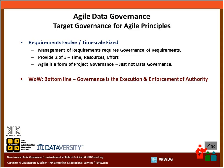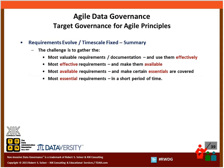The bottom line is that with governance, we want to execute and enforce authority — and we're going to do that through our agile efforts, because the agile efforts are not going away. We want to make sure the data aspects of these things are being addressed. The challenge is to gather the most valuable requirements and documentation, use them effectively, make them available, make certain the essentials are covered, and be able to do that in a short period of time. If we can do that, we will successfully apply governance to our agile efforts.